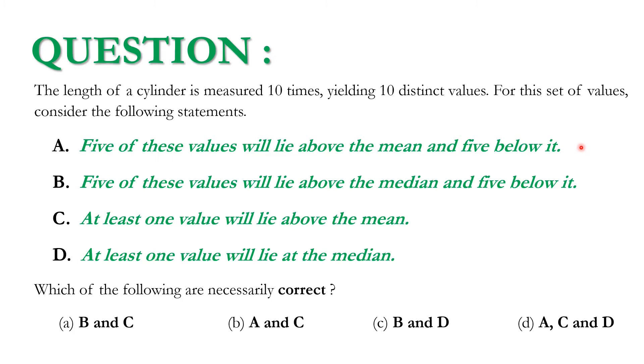Statement A: Five of these values will lie above the mean and five below it. Statement B: Five of these values will lie above the median and five below it. Statement C: At least one value will lie above the mean. Statement D: At least one value will lie at the median.